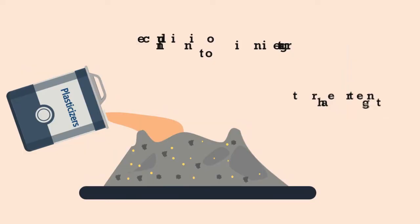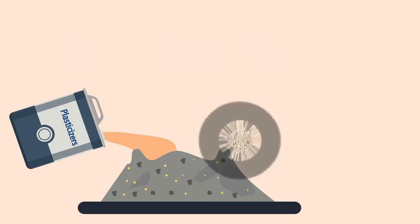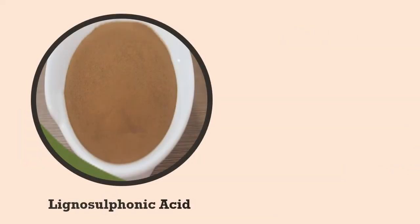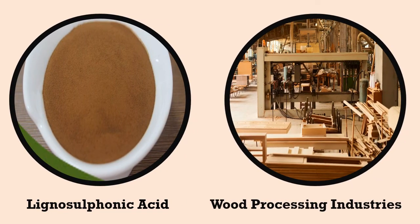A good plasticizer fluidizes the mortar or concrete in a different manner than that of the air entraining agents. Some plasticizers, while improving the workability, entrain air also. One of the common chemicals generally used is lignosulfonic acid in the form of either its calcium or sodium salt. This material is a natural product derived from wood processing industries.